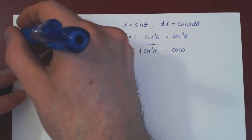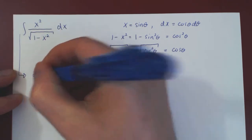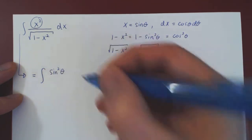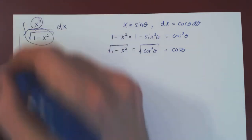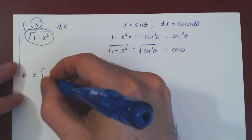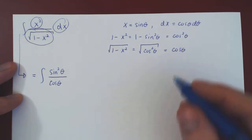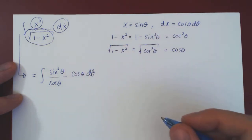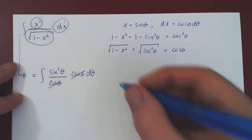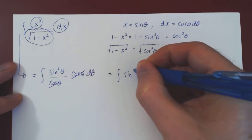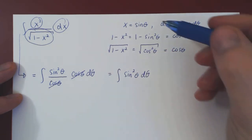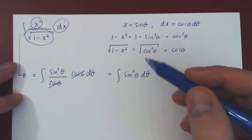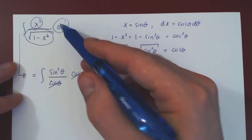Now let's see what happens to the integral. x squared becomes sine squared theta; over the root of 1 minus x squared, that is cosine of theta; times dx, which is cosine of theta d theta. We can simplify: cosine over cosine cancels, and that leaves us with the integral of sine squared of theta. When you make a trigonometric substitution and replace the old variable as a trigonometric function of the new variable, the original integral becomes a trigonometric integral.